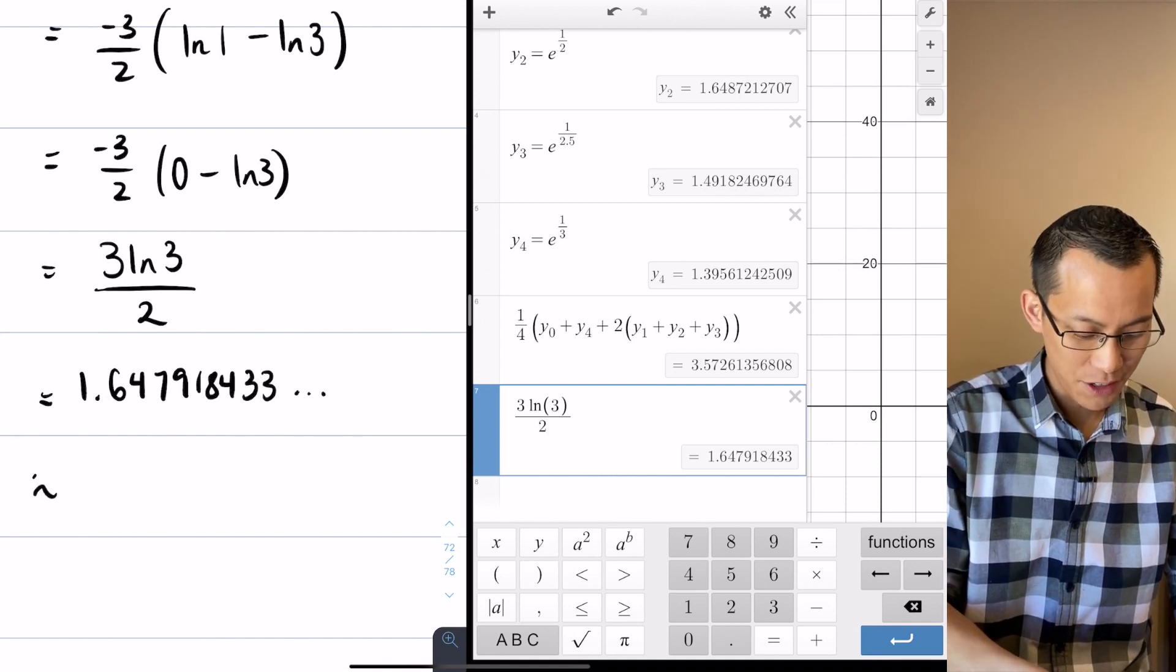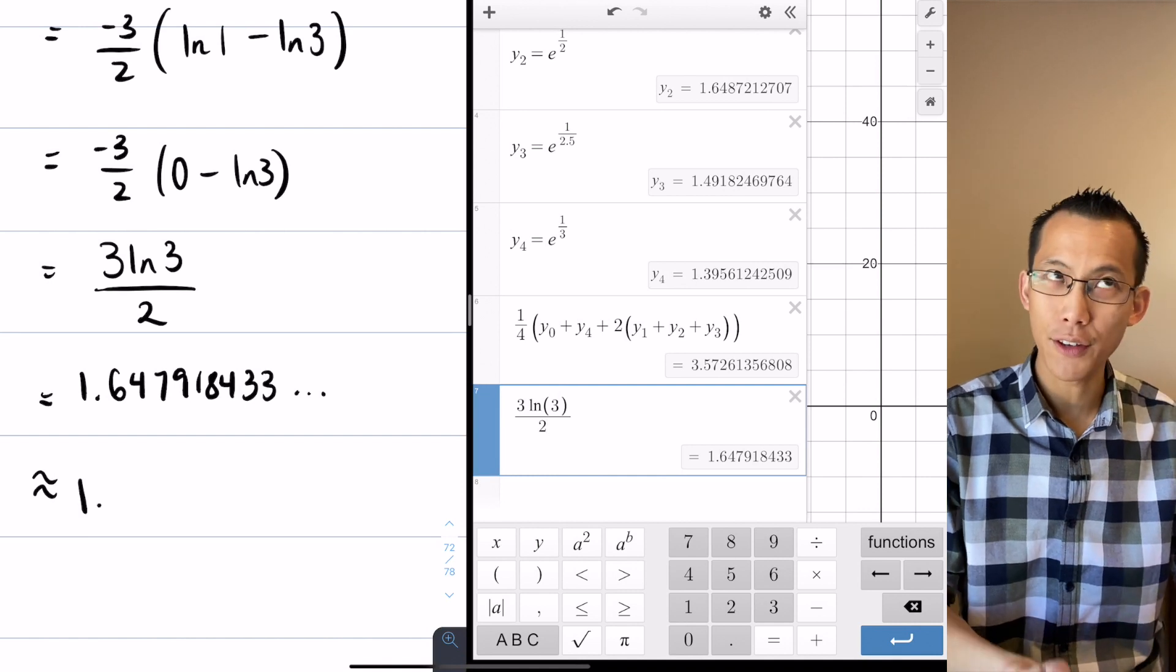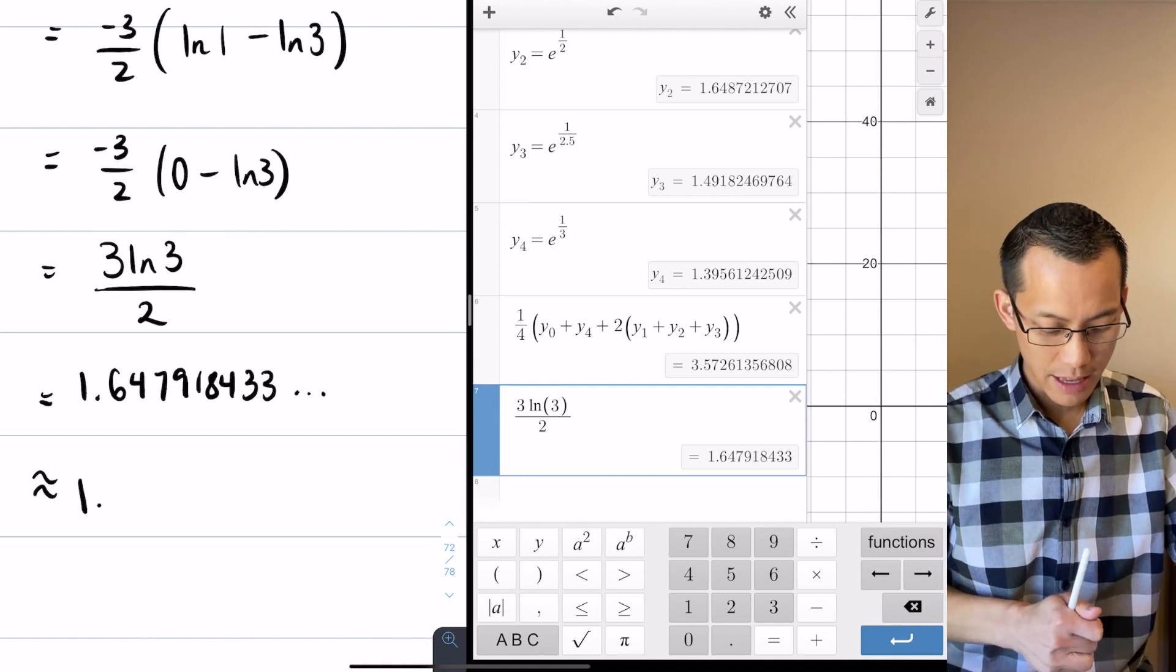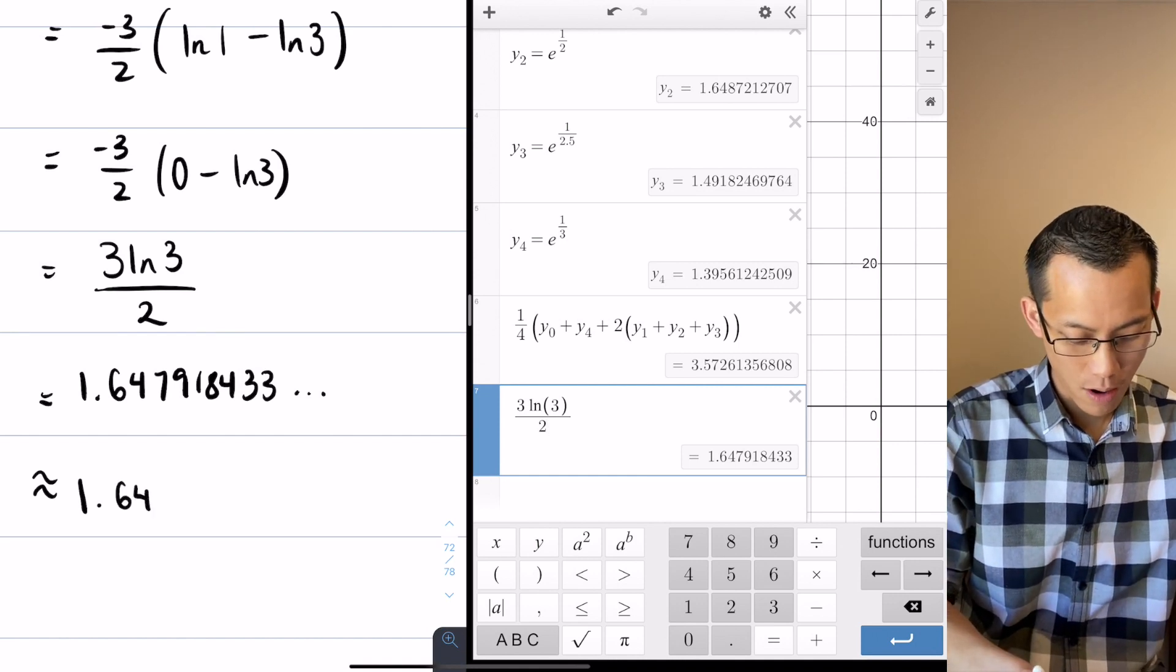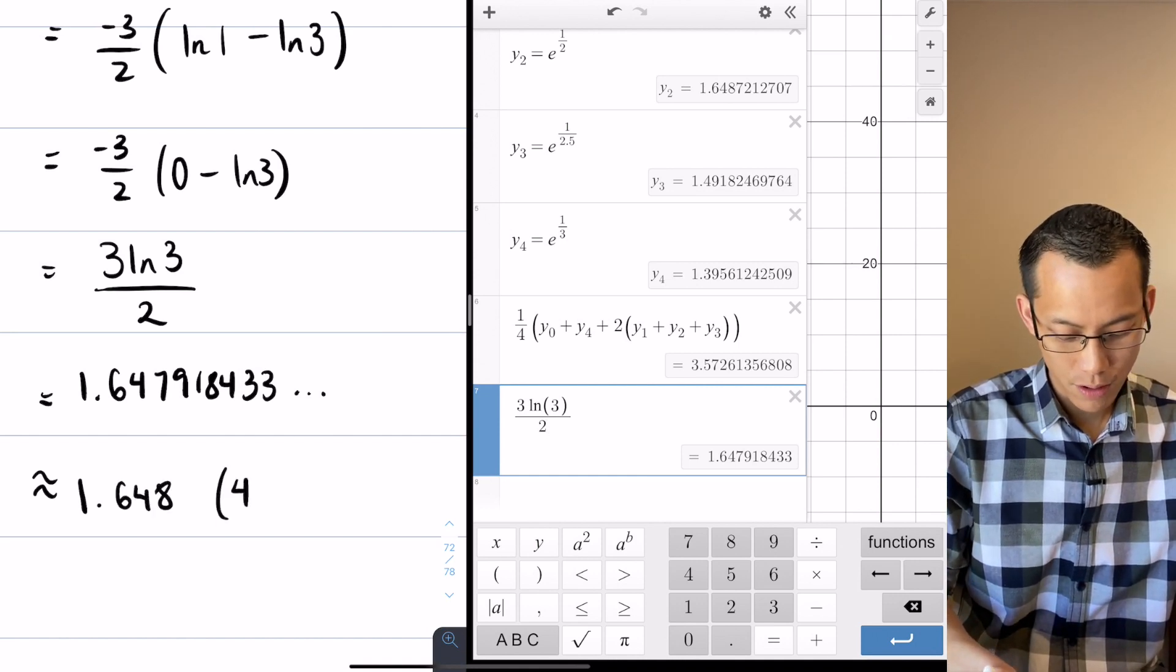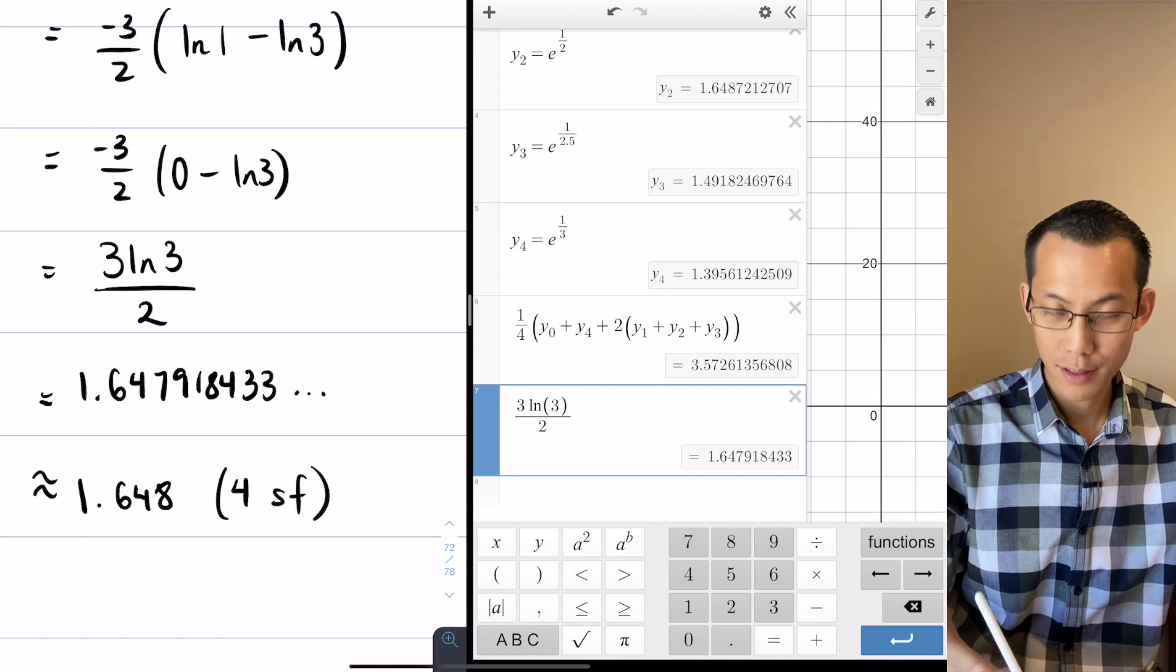And now I'm going to do my approximation. So four significant figures—I've already got the unit, then I'm going to go tenths, hundredths, thousandths. So that's 1.648 to four significant figures. Done.